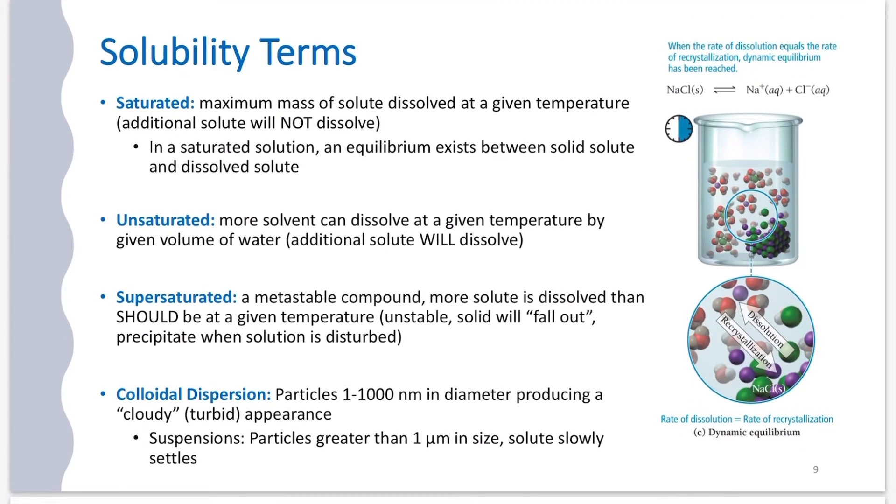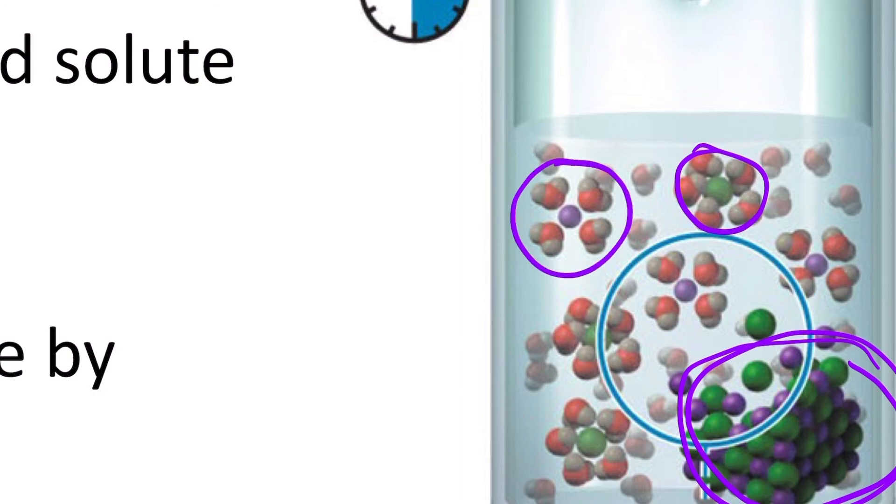We also have saturated, unsaturated, supersaturated, and a colloidal dispersion. So saturated is when the maximum mass of solute dissolved at a given temperature has been reached, meaning if I add more solid, no more can dissolve. Everything has a saturation limit. Even sodium chloride dissolves in water, but eventually I will add enough sodium chloride to that water that no more will dissolve. At that point, the solution has been saturated. You're going to learn more about equilibrium very soon, but you're going to see that what's actually happening in solution is what's pictured here. And we see our sodium chloride is breaking apart into sodium ions and chloride ions. We've got the sodium chloride here, and it's slowly breaking apart into little chloride ions and little sodium ions that are surrounded by water molecules.